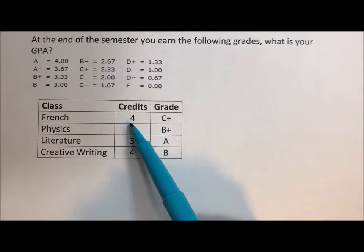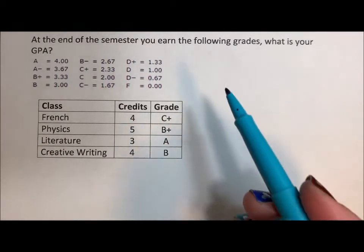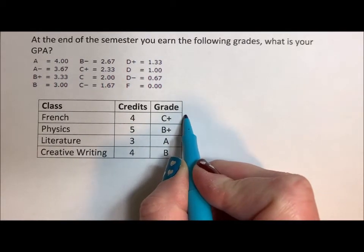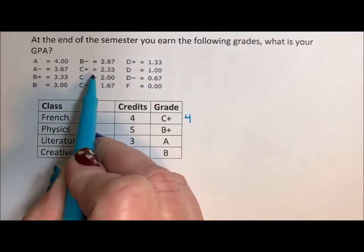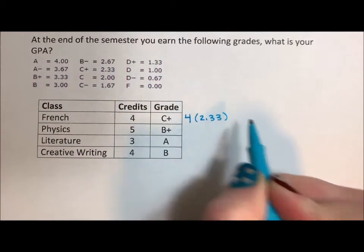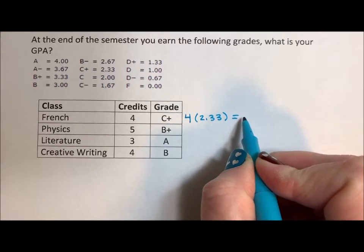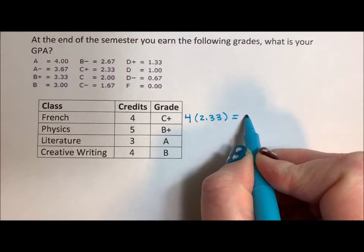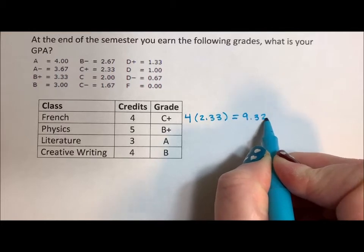So you take French, which is a four-credit class, and you get a C+. So that means that for each of the four credits, you earn 2.33 credits. So at the end of the semester, you've earned a total of 9.32 credits.